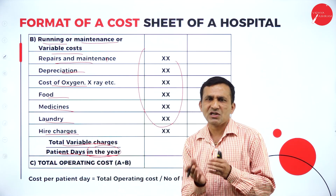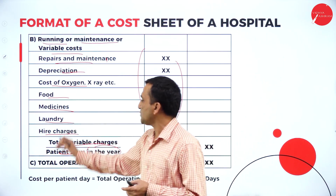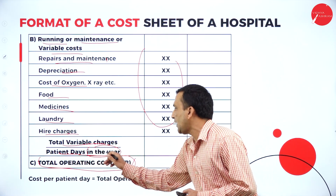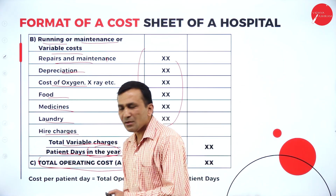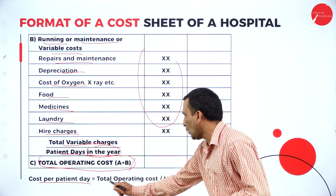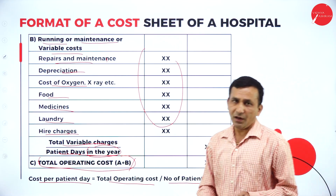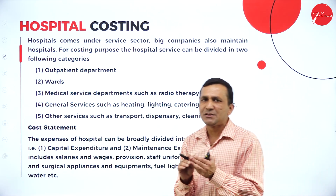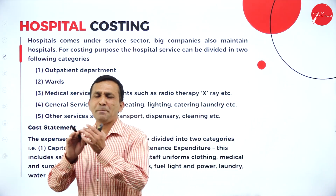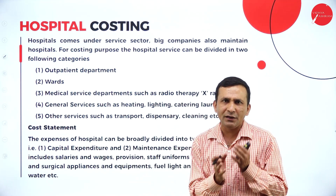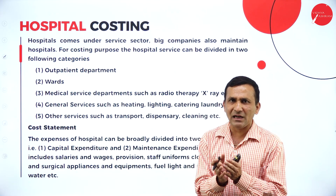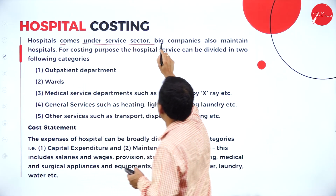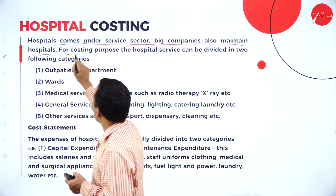Fixed (category A) plus variable (category B) gives the total operating cost. If you directly divide by patient days in a year, you get the rate. The formula is simple: cost per patient per day = total operating cost divided by number of patient days in a year. For hospital costing, unlike transportation where we use cost per kilometer or per passenger, we think in terms of cost per patient or per bed.